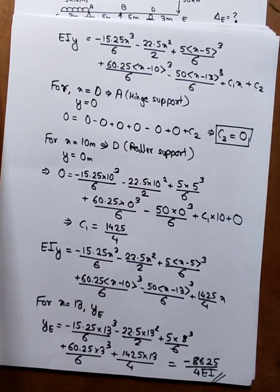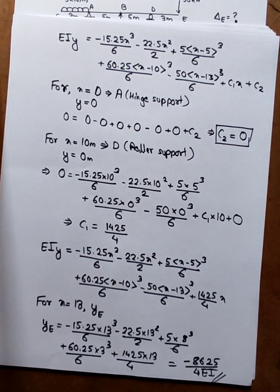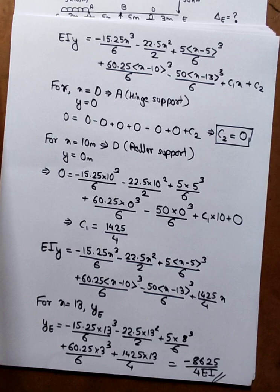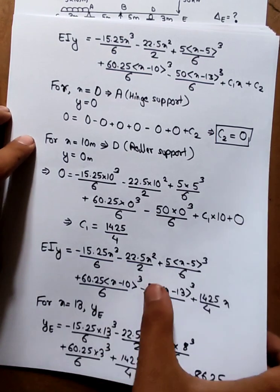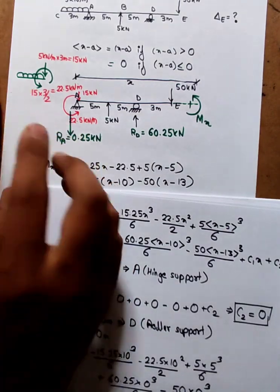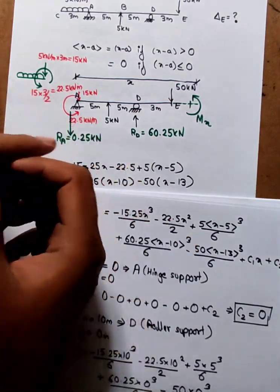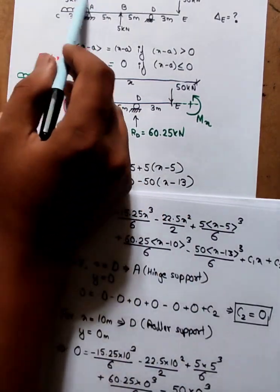This is the final answer. The deflection is 8625 by 4 EI. If you look at the moment area method, it will be 18. The answer from this method is 18. Looking at the overhanging part, I convert the equivalent force to the moment.